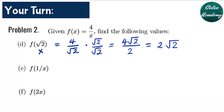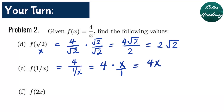For question letter E, f of 1 over x — we substitute 1 over x into the denominator, giving us 4 divided by 1 over x. To simplify, recall how to divide fractions using keep-change-flip: keep the numerator 4, change division to multiplication, and flip 1 over x to x over 1. So the answer is 4 times x, which is 4x. For question letter F, we substitute 2x into 4 over x, giving us 4 divided by 2x. Simplifying, 4 divided by 2 is 2, with a denominator of x, so the answer is 2 over x.